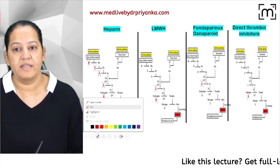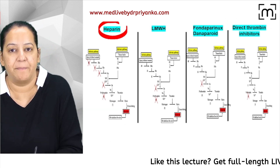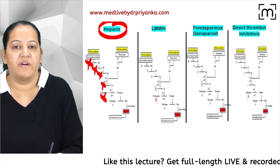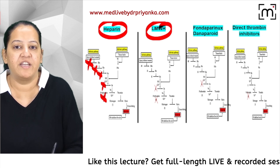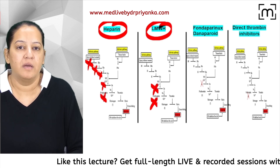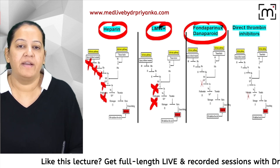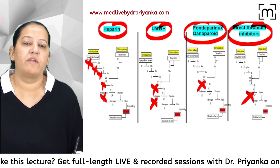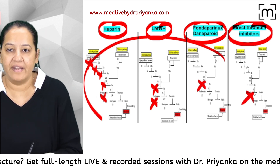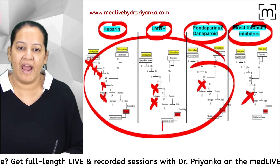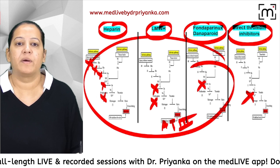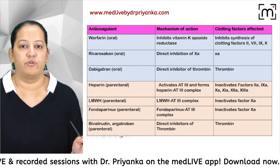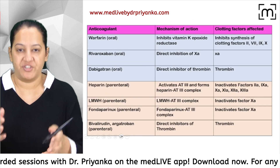To summarize parenteral anticoagulants: heparin inhibits five factors; low molecular weight heparin inhibits two (factor 10 and 2); danaparoid/fondaparinux inhibits only factor 10; and direct thrombin inhibitor inhibits only factor 2 directly. The first three are indirect via antithrombin 3; the last one is direct.